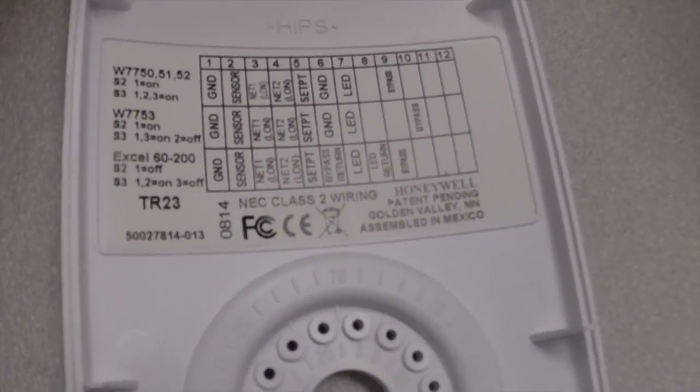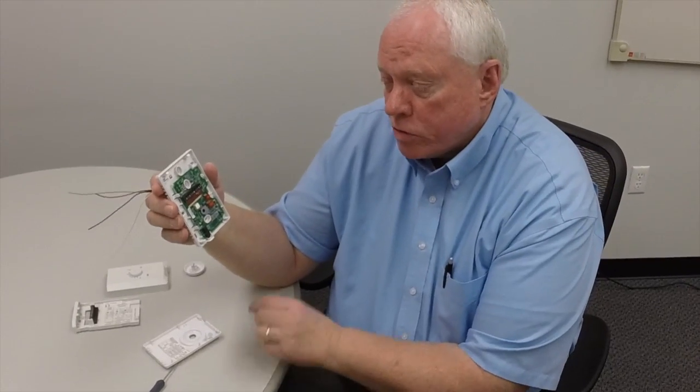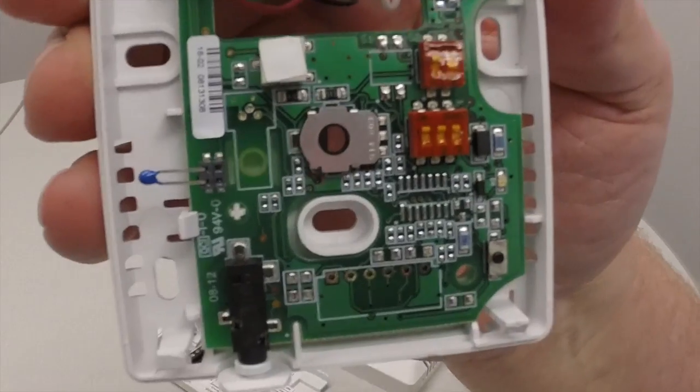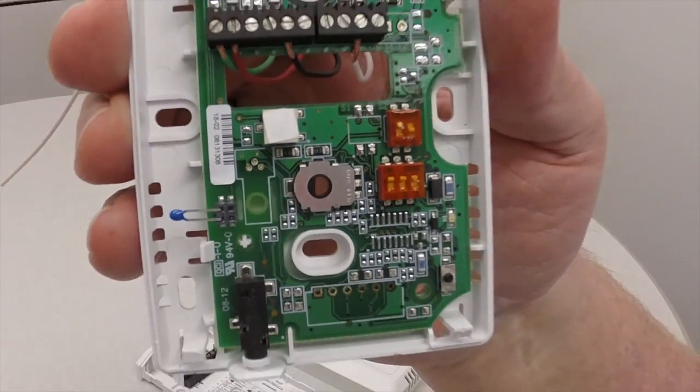On the new TR-23, they have dip switches that are right here. You don't have to worry about using the dip switches; they're in the right position.